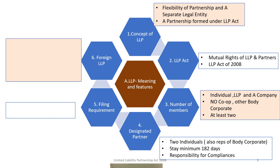The LLP Act also specifies designated partners, who are just like compliance officers in a regular company. They must be individuals, and there should be a minimum of two designated partners. If the number falls below two, every member is treated as a designated partner. Where members are corporates or LLPs, they can nominate individuals as designated partners. The only residency requirement is that a designated partner must have stayed within the country for a minimum of 182 days during the previous year.